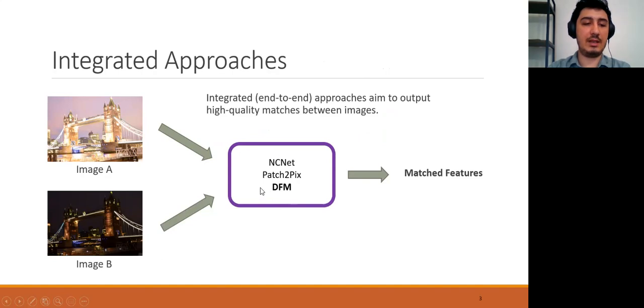On the other hand, some recently developed integrated approaches find correspondences between two images by benefiting the features of a single network, instead of separately doing feature detection, description, and matching. This integrated approach aims to output high-quality matches between images. And CNET and Patch2Pix are some examples of integrated approach. Also, our algorithm, DFM, takes part in this approach.